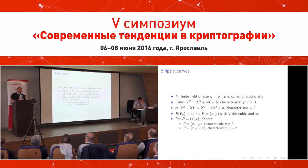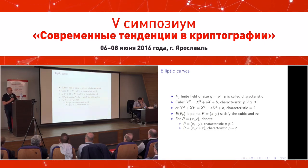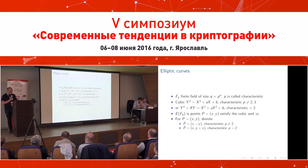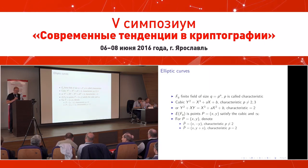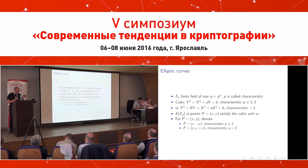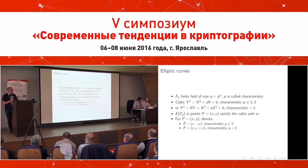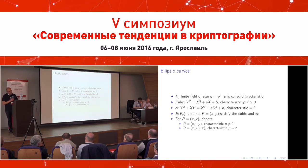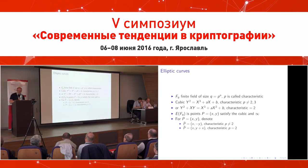Now I want to introduce the group operation. For an affine point with coordinates (x, y), the negation of this point is (x, −y) in the case where the characteristic is different from 2, and (x, y+x) in the case of characteristic 2.